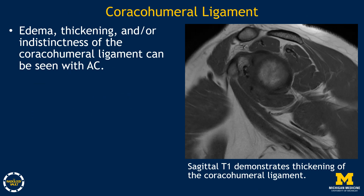The coracohumeral ligament is another region to investigate in shoulder MRI to assess for adhesive capsulitis. If you notice edema, thickening, and/or indistinctness of the coracohumeral ligament, this can also be seen with adhesive capsulitis. Here on the right-hand side, we have a sagittal T1 image demonstrating thickening of the coracohumeral ligament, as annotated by the arrow.